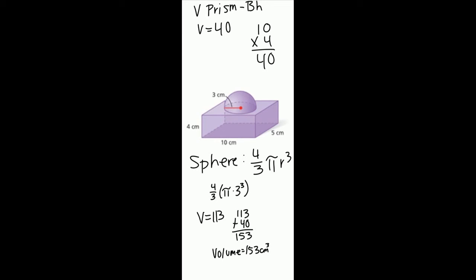Now the half sphere: 4 thirds times pi times radius cubed. We get 4 thirds times pi times 3 cubed. We get 113.